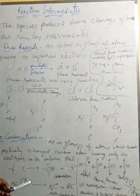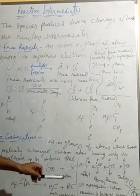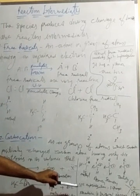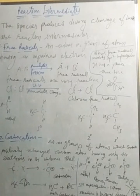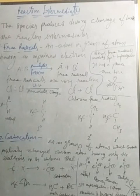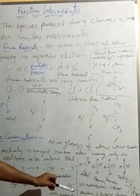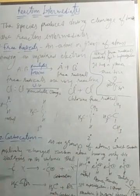Regarding hybridization, carbocations involve sp2 hybridization. They have three sp2 hybridized orbitals forming three sigma bonds, and due to the presence of these three sigma bonds, their structure is trigonal planar.